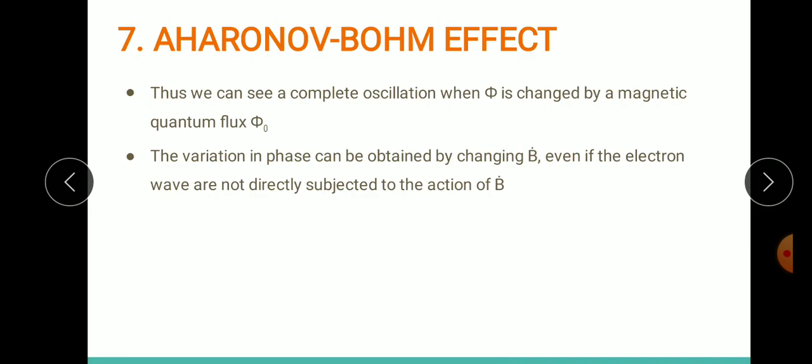We can see there is a complete oscillation when you change the value of Φ by a quantum flux Φ₀. This variation in phase can be obtained when you change the magnetic field to B, even if the electron is not directly subjected to B.